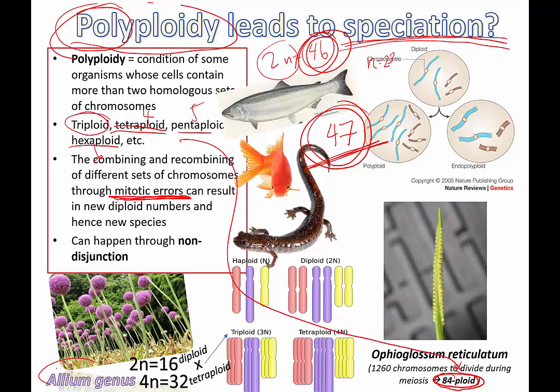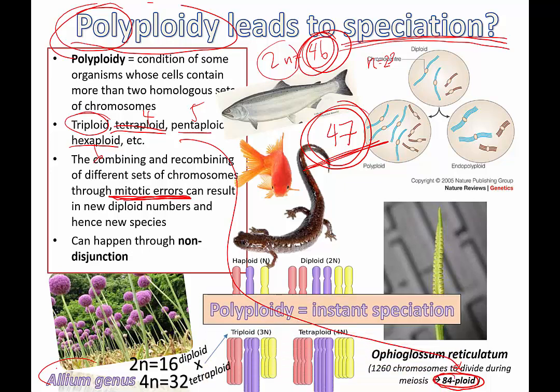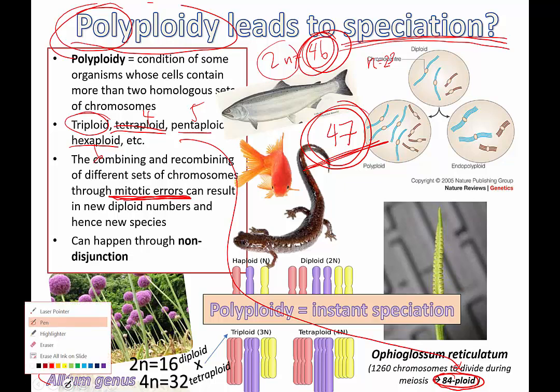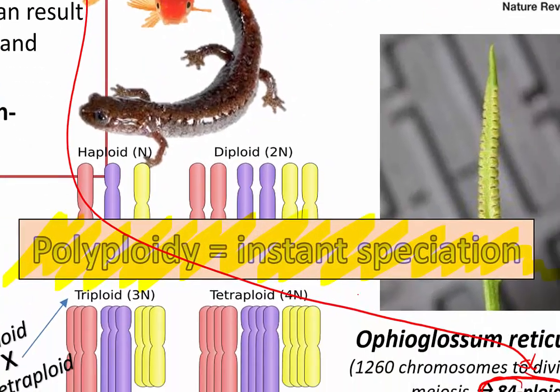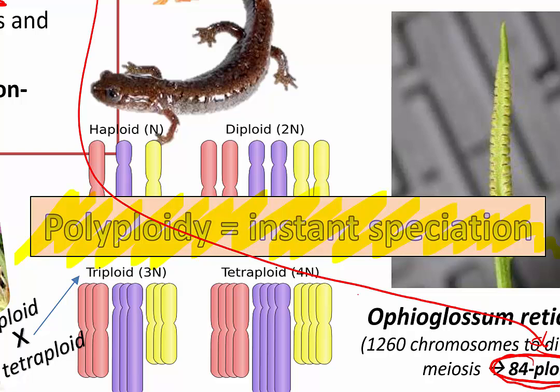They don't result in the organism failing to develop because all the genes needed for development are still there — there are just extra copies of those genes. But it creates new combinations, and the bottom line is: polyploidy means instant speciation.